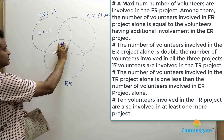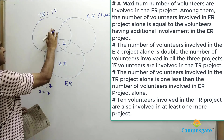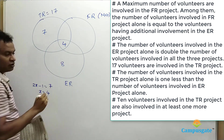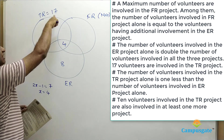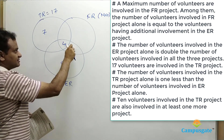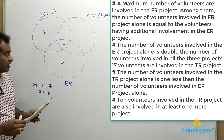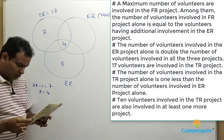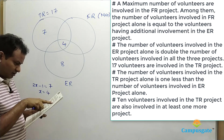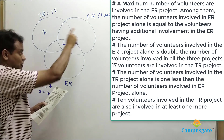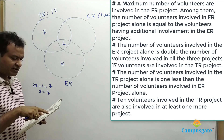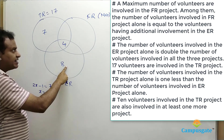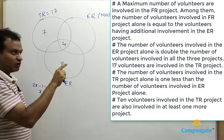So X equals 4. Therefore 2X minus 1 equals 7 (since 4×2 minus 1 = 7), and 2X equals 8. We also know the total TR circle value equals 17, which means the remaining three regions outside TR together should equal 20. Using clue 1, since the all-three-projects region is 8, sum of the two FR-related overlap regions equals 12.